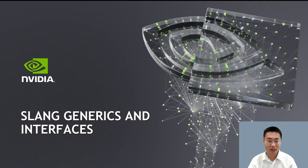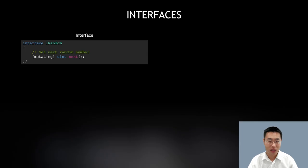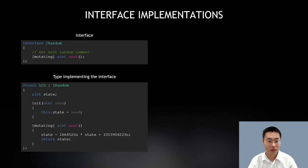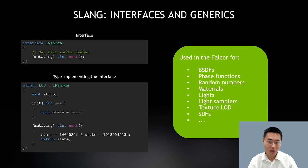Now let's get into more details of the Slang generics and interfaces features. I'm going to use Falcor's random number generation as an example. Slang allows developers to define explicit interfaces that modules can implement. A random number generator needs a way to generate a next value, and doing so is allowed to mutate the state of the generator. A concrete type like LCG can inherit from the interface, and the compiler will enforce that it must implement all the operations required by the interface. New types can be added in a modular fashion without needing to edit any existing code.